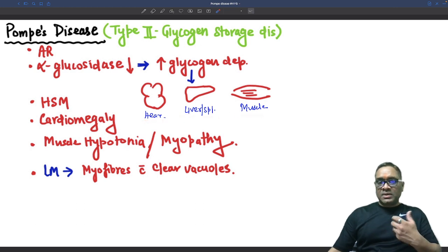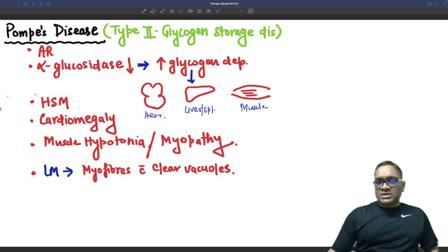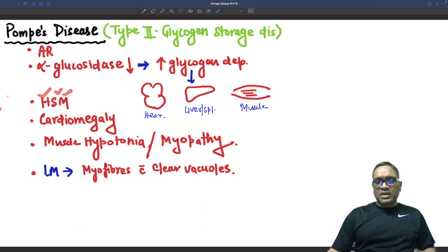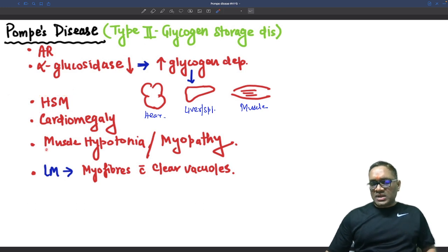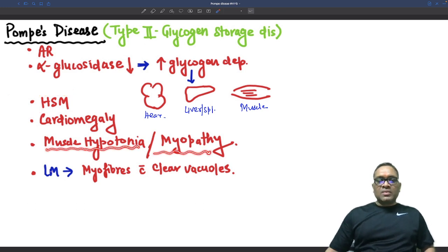So what will happen? There will be hepatosplenomegaly because of liver and spleen accumulation. Heart enlargement because of cardiac accumulation — so cardiomegaly — and in muscle you will see hypotonia and myopathies.